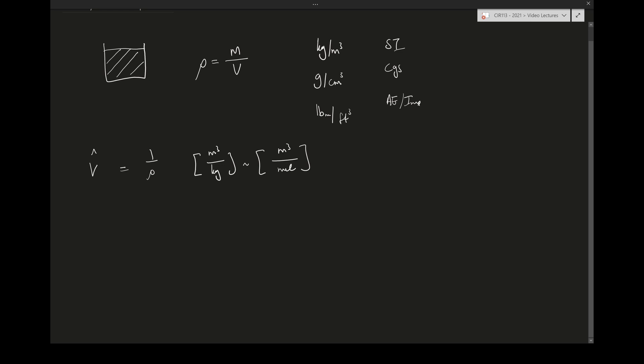So density is the mass per volume, and specific volume is the inverse of density or volume over mass. Now the next part of density I want to talk about is what we call SG or specific gravity.